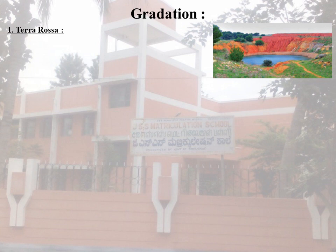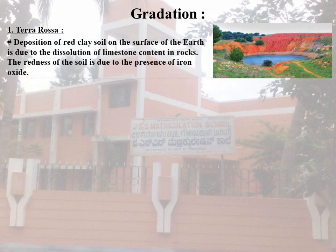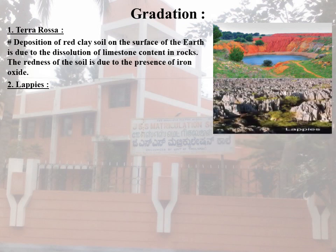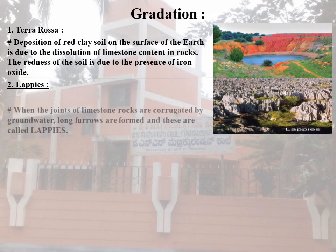The redness of the soil is due to the presence of iron oxide. The second type of underground water landform is Lapiés. When the joints of limestone rocks are eroded by groundwater, long furrows are formed, and these are called Lapiés.